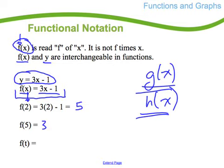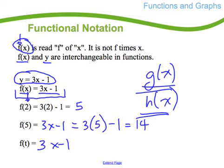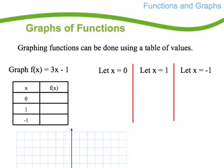To find f(5), I take the same function 3x - 1 and plug in 5 wherever there's an x. Same with f(t)—I plug in t, giving 3t - 1. These numbers are called the inputs, and the result is called the output. That's a little bit on functional notation.